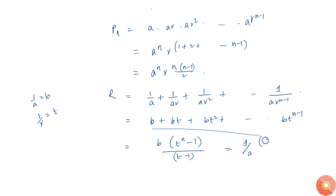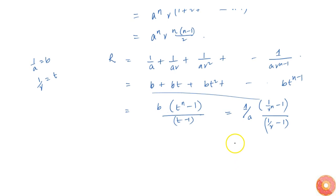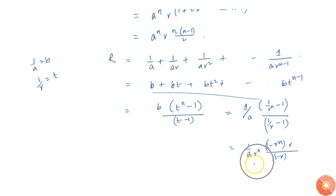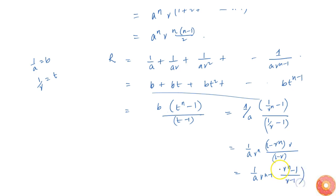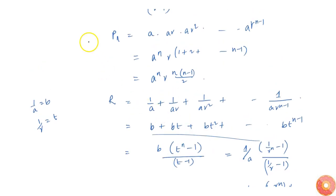Substituting back, this simplifies to 1 by a times (1 minus r power n) divided by (1 minus r) times r power n minus 1. Rearranging by changing the sign of both numerator and denominator, R becomes 1 by r times r power n minus 1 divided by r minus 1.